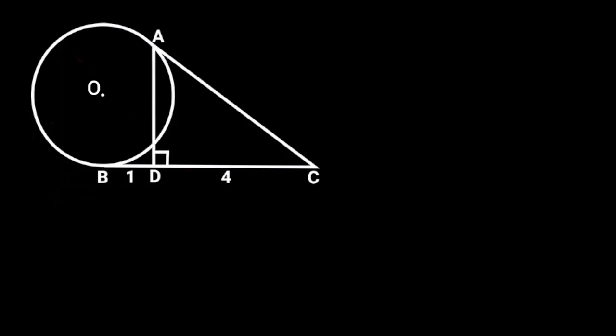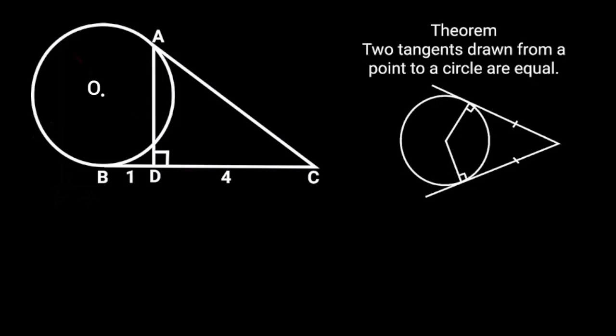To solve this problem, first let's recall the circle theorem of tangents from a point to a circle. It states that two tangents drawn from a point to a circle are equal. From this theorem, it follows that AC is equal to BC.